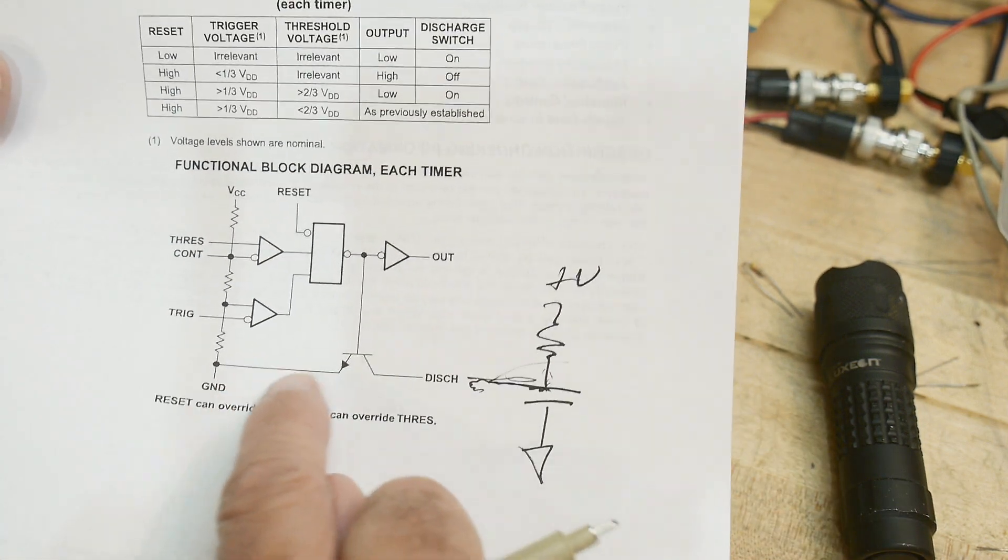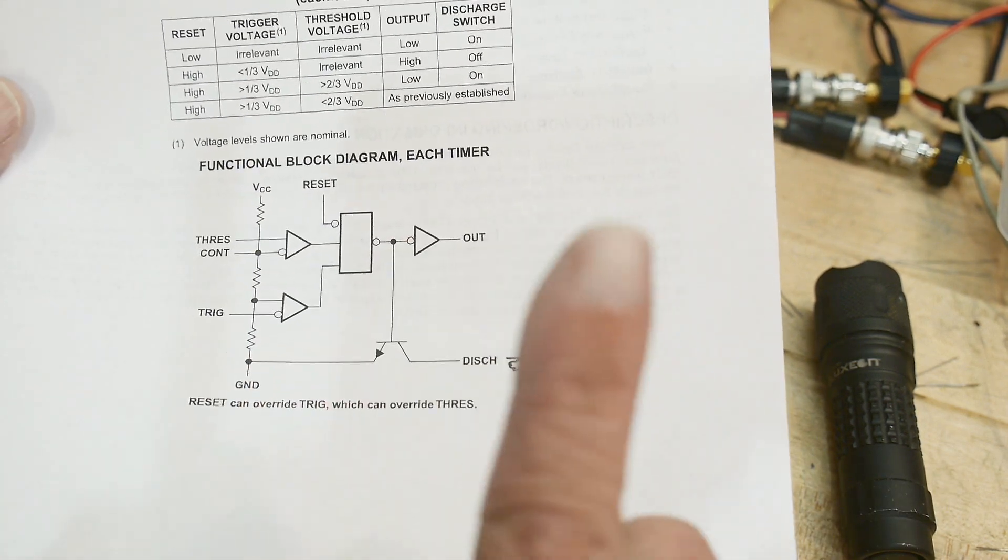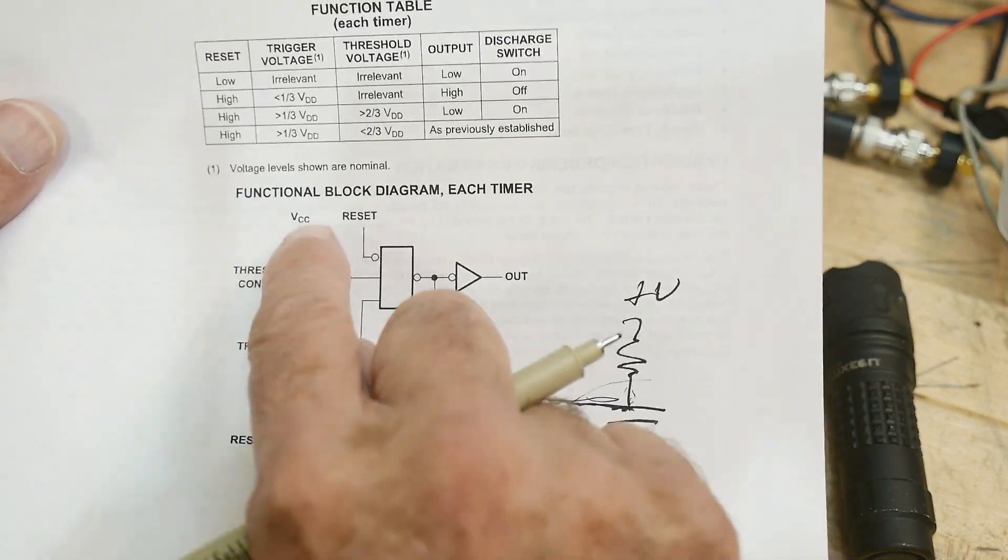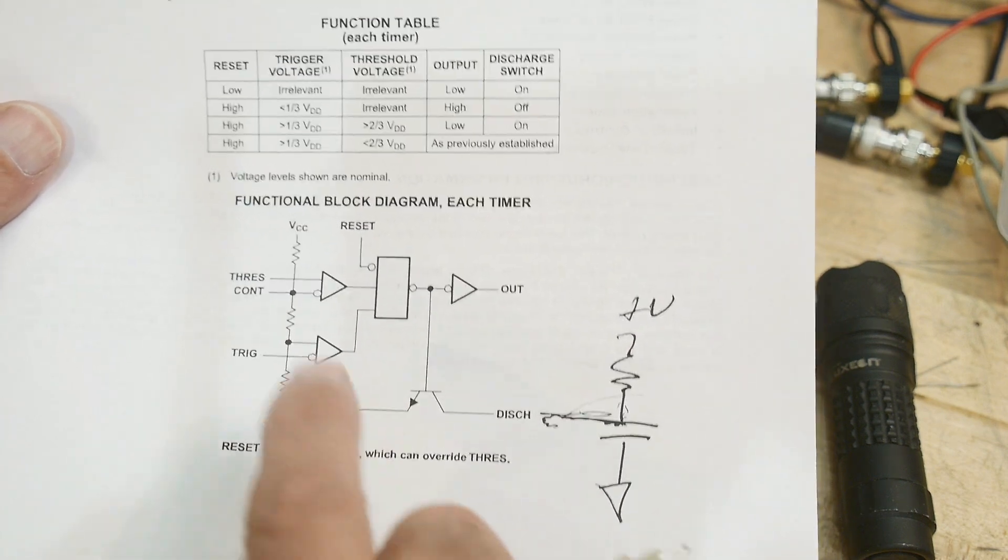Then we get to charge it up again, suck it back down to ground. All right, and when do we do this? Well, there's a comparator. So we just have some comparator voltages set here. In fact, they're already done for us.